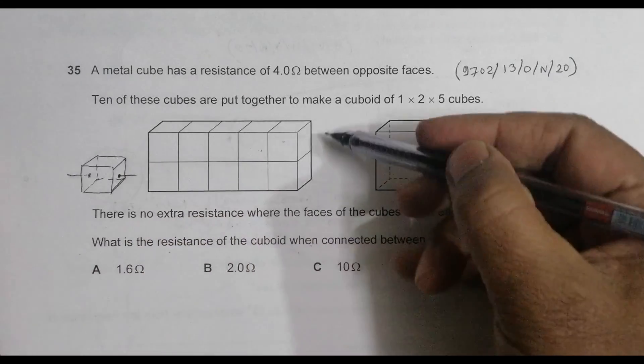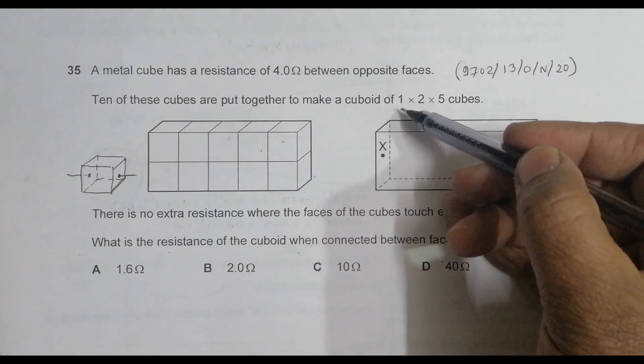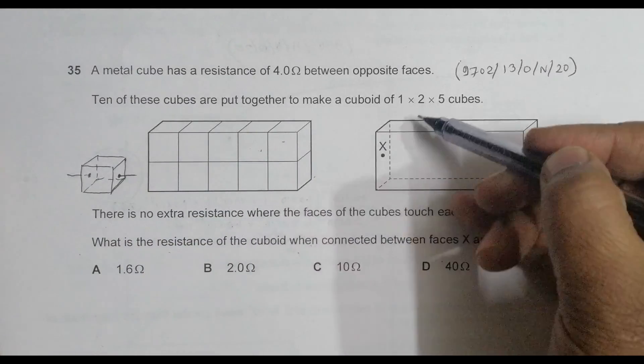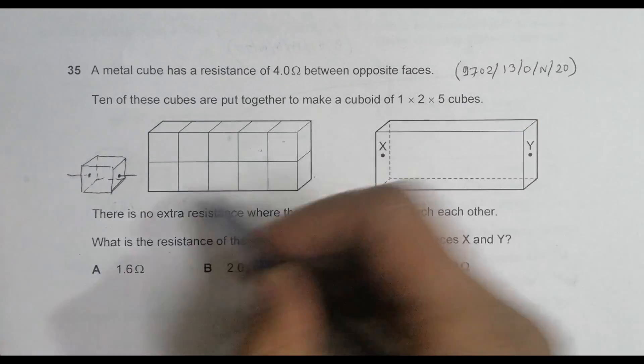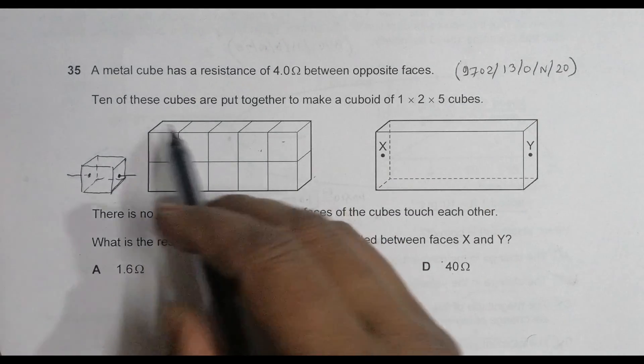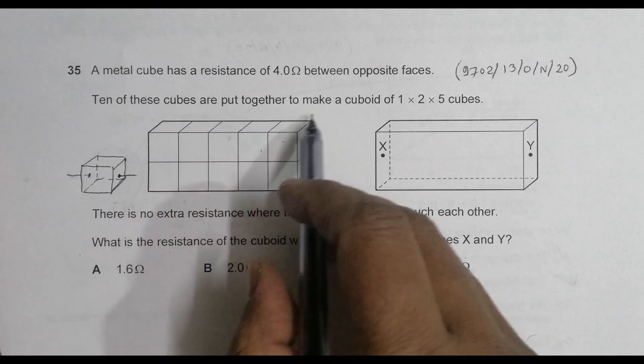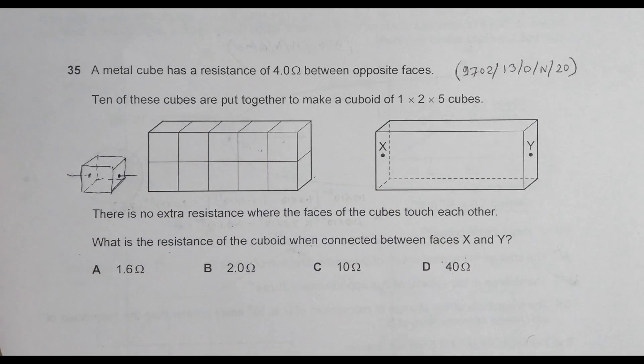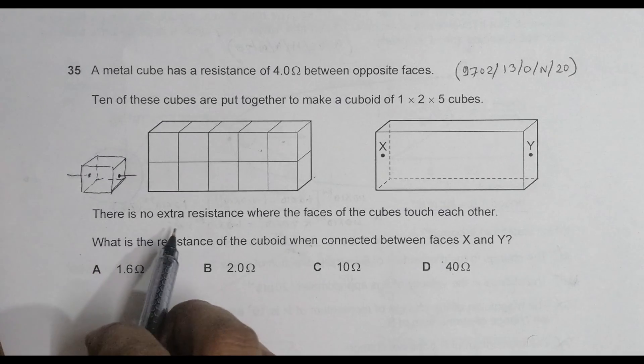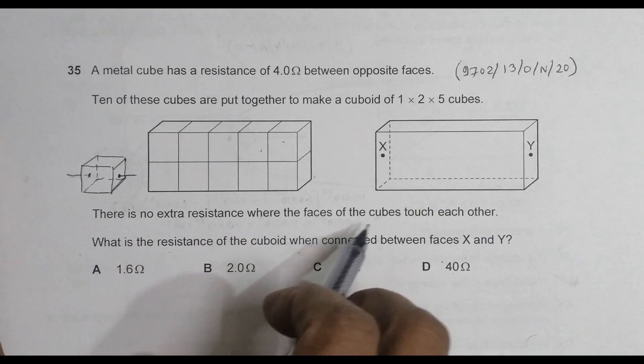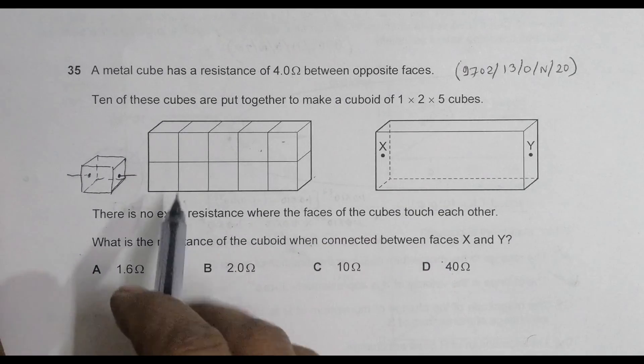Five here, two here, one here. So it is one, two is this height, and five is along the length. Ten of these cubes are put together to make a cuboid of 1 into 2 into 5 cubes. There is no extra resistance where the faces of the cubes touch each other.